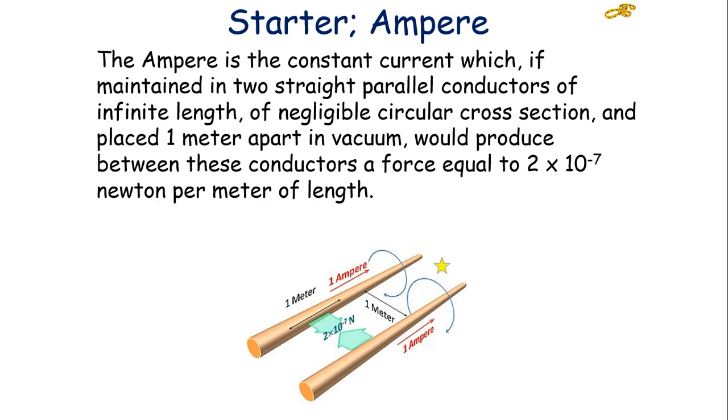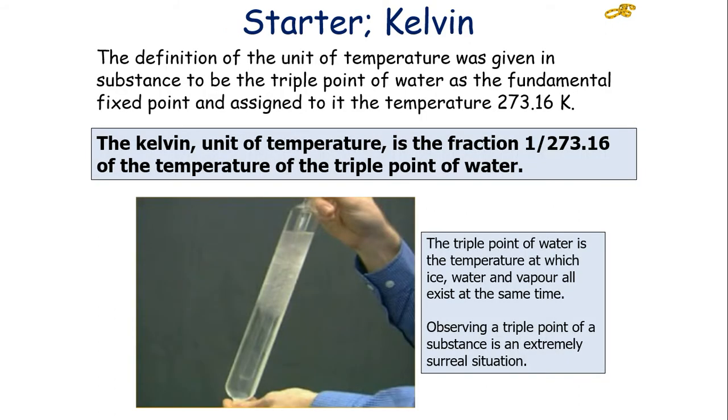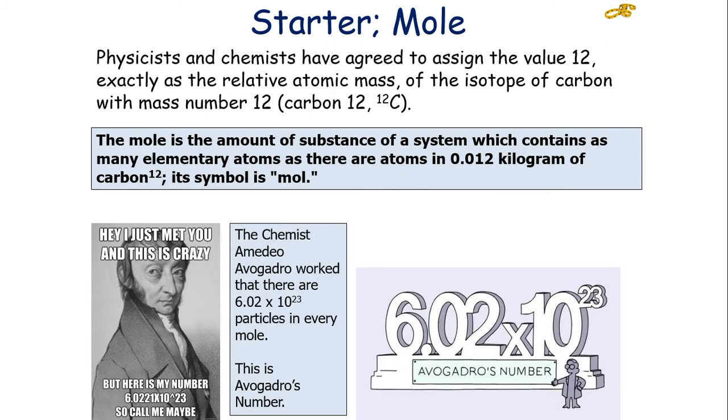The ampere is the constant current which, if maintained in two straight parallel conductors of infinite length of negligible cross-sectional area and placed one metre apart in a vacuum, would produce between the conductors a force equal to 2 times 10 to the minus 7 newtons per metre of length. And the definition of the kelvin was given to form the triple point of water as the fundamental fixed point and assigned that to have a temperature of 273.16 Kelvin. So the kelvin is the fraction of 1 over 273.16 of the temperature of the triple point of water.